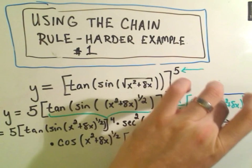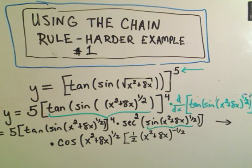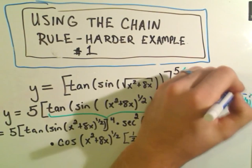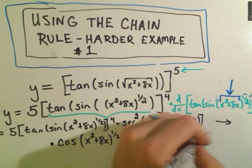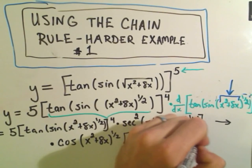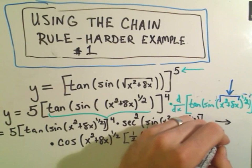The last thing that I have to do is I have to move inside yet once again. Now the inside part would be the x squared plus 8x. So if I multiply by the derivative of that, I'll simply get 2x plus 8.